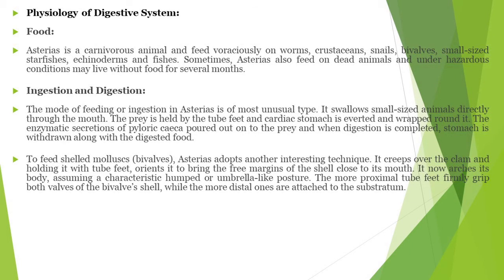Looking at digestion: starfish are carnivorous animals that voraciously feed on worms, crustaceans, snails, bivalves, small-sized starfish, fish, and echinoderms. Sometimes starfish also feed on dead animals, and under hazardous conditions they may live without food for several months. The mode of feeding in starfish is of the most unusual type. Small-sized animals are swallowed directly through the mouth. The prey is held by the tube feet and the cardiac stomach is everted — the animal holds the prey with tube feet while the stomach is evoked.